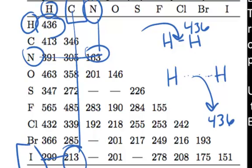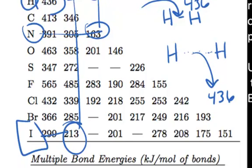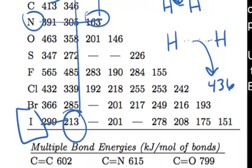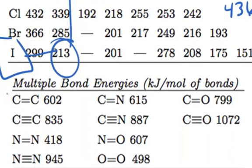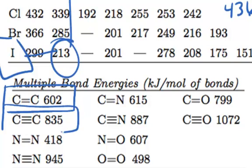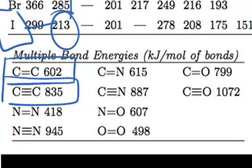Bond energy is a measure of bond strength, and we know that multiple bonds are stronger. A carbon-carbon double bond has a bond energy of 602 kilojoules per mole, and a carbon-carbon triple bond has a bond energy of 835 kilojoules per mole. This bond energy information can be read off bond energy tables.